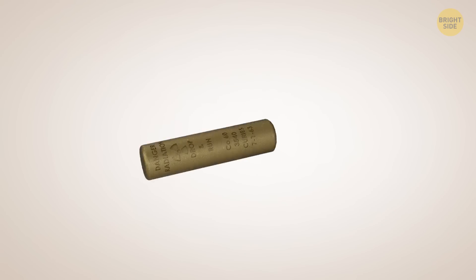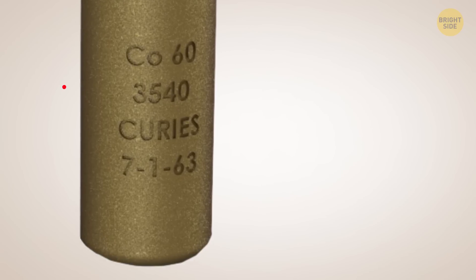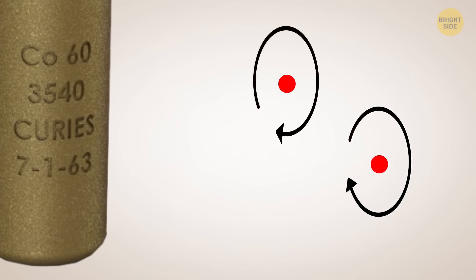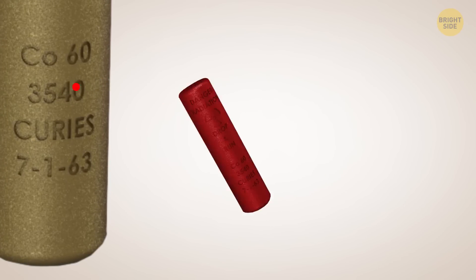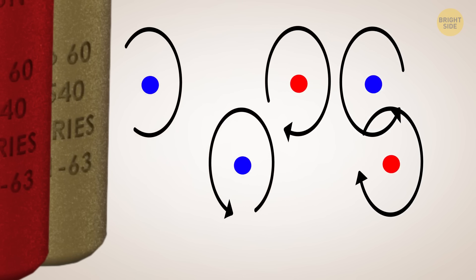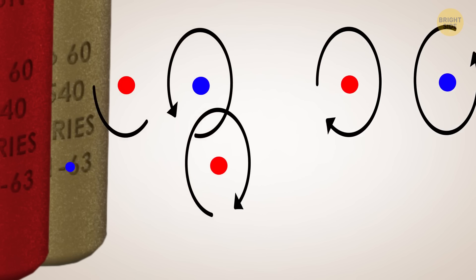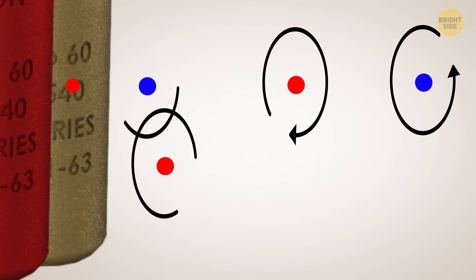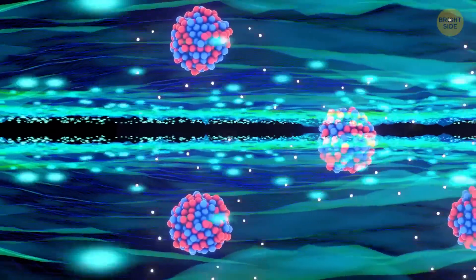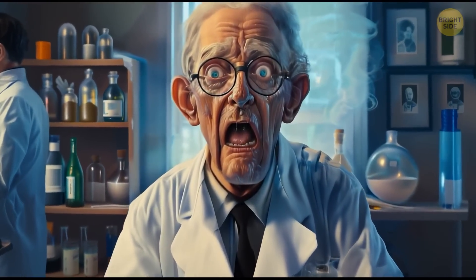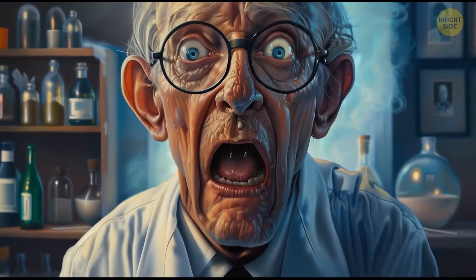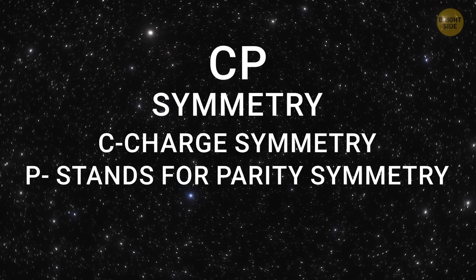For example, if you take a piece of cobalt-60, it will emit particles that spin in one direction. But, if you take the opposite of cobalt-60, the particles it emit will spin in the opposite direction. But, they were expected to spin in the same direction. So, what's going on here? Basically, it turned out that CP symmetry didn't work for certain weak nuclear reactions. The weak nuclear force is just weird like that, I suppose. This observation puzzled scientists for years.